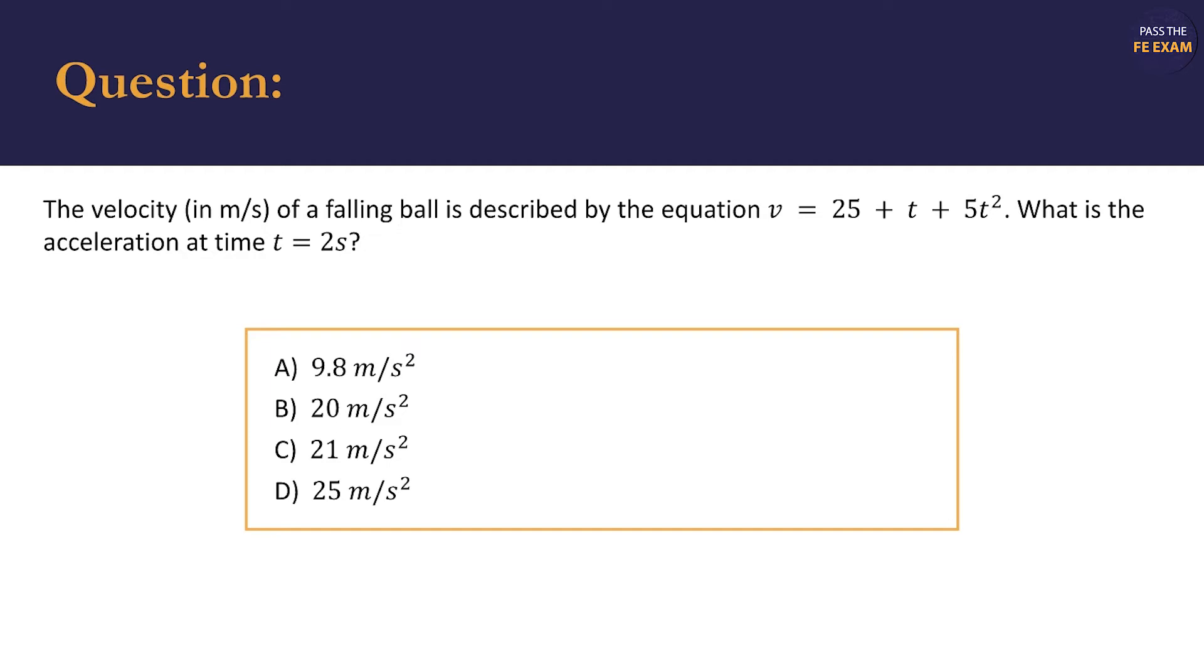We can safely assume that the variable v is velocity in meters per second and the variable t is time in seconds. However, those are probably the only assumptions that we should make.